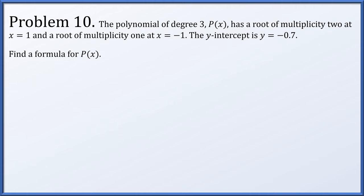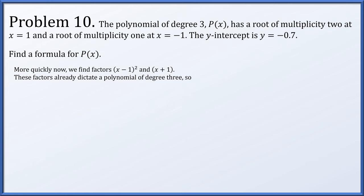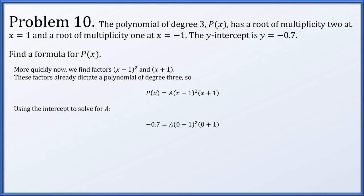In problem 10, we have a degree 3 polynomial with a root of multiplicity 2 at x = 1, a root of multiplicity 1 at x = negative 1, and the y-intercept is at y = negative 7 tenths. We get factors (x minus 1) squared and (x plus 1), giving p(x) = a times (x minus 1) squared times (x plus 1). Setting x = 0, p(x) = negative 7 tenths, we solve for a = negative 0.7. So p(x) = negative 7 tenths times (x minus 1) squared times (x plus 1).